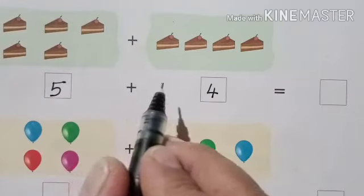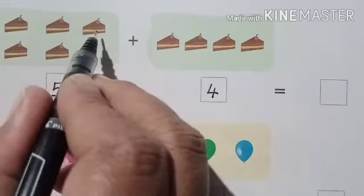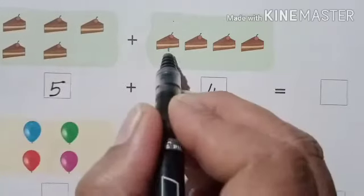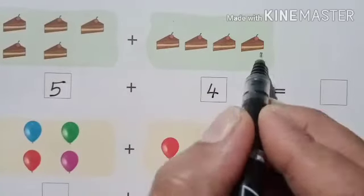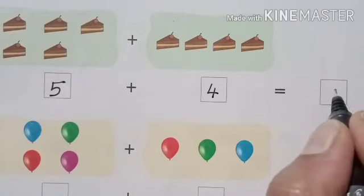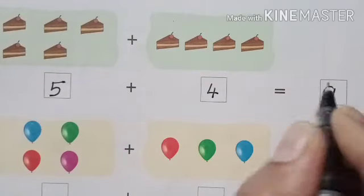All together, how many cakes are there? 1, 2, 3, 4, 5, 6, 7, 8, 9. So the answer is 9.